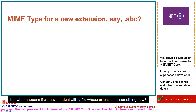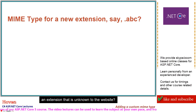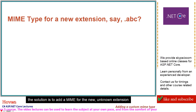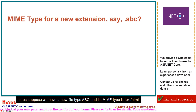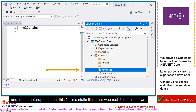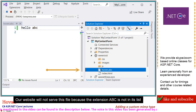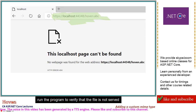But what happens if we have to deal with a file whose extension is something new — an extension that is unknown to the website? The solution is to add a MIME type for the new unknown extension so that the ASP.NET Core website can serve it. Let us suppose we have a new file type with extension ABC and its MIME type is text/HTML. This file is a static file in our web root folder, but our website will not serve it because the extension ABC is not in its list. Run the program to verify that the file is not served.